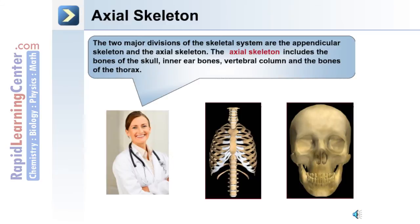There are two major divisions of the skeletal system: the appendicular and the axial. The axial skeleton includes the bones of the skull, the inner ear bones, the vertebral column, and the bones of the thorax, including the ribcage.